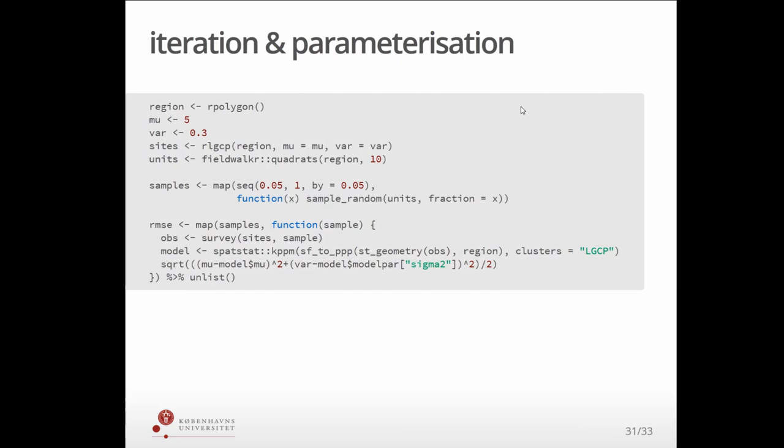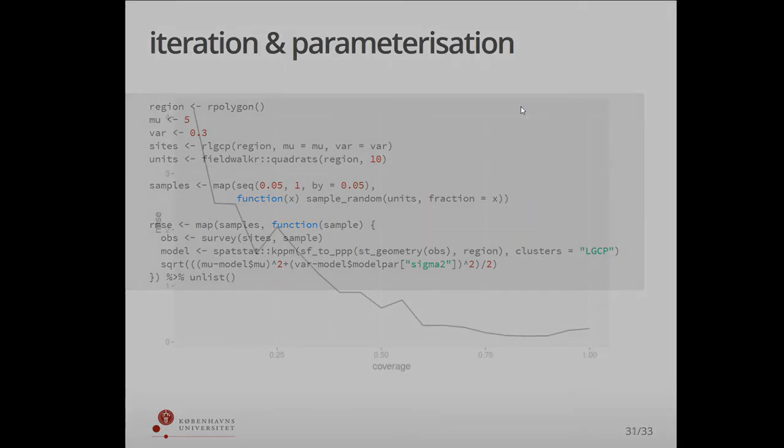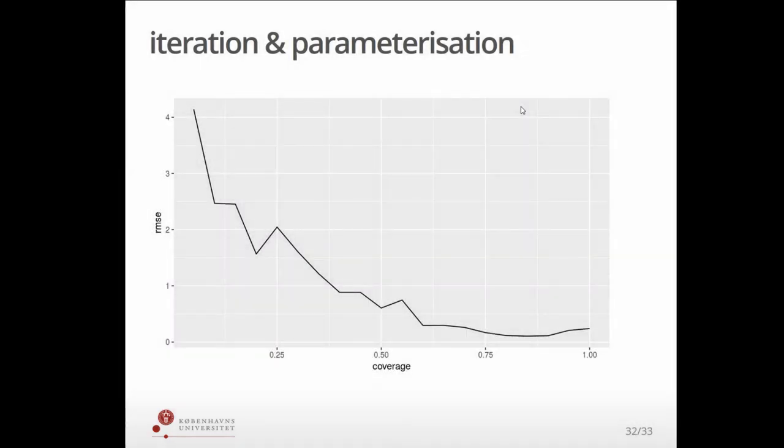And then here I think the real benefit of R comes in is that you don't want to do what I've just done once. You want to do it a hundred times with a hundred different options, really explore the parameter space of the survey and maybe end up with something like this. So, you know, here, just altering the amount of coverage that we do in the sense of the proportion of survey units that we select, see how that affects the root mean square error of our model estimation. And so in this example, we'd see, well, actually going beyond 50% coverage does not give us really a significant amount of additional information.